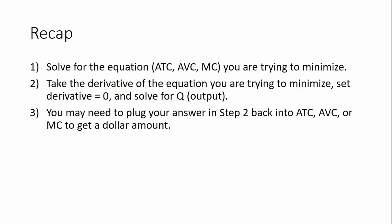To recap: first, you need to get the equation you're trying to minimize — that can be average total cost, average variable cost, or marginal cost. Next, take the derivative of the equation you are trying to minimize, set that derivative equal to 0, and solve for q. Also keep in mind you may be prompted to plug your answer back into either average total cost, average variable cost, or marginal cost to get a dollar amount. I hope you found this video helpful. Thank you.